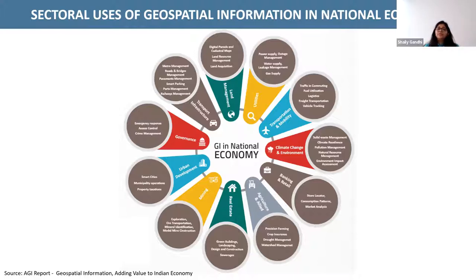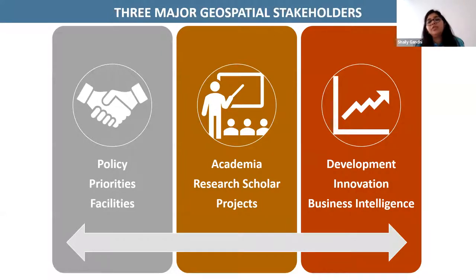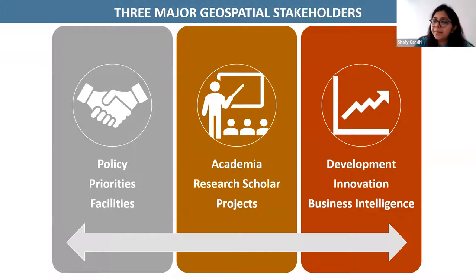When you look at the sectorial use of geospatial information, it has touched almost each and every possible sector in India — transportation and mobility, climate change, banking and retail, agriculture, real estate, insurance, mining, urban development, government, land management, and transport infrastructure. The three major stakeholders are: first, government policy priorities and facilities; second, academia where research, scholars, and projects take place; and third, development, innovation, and business intelligence where the private sector comes into the picture.